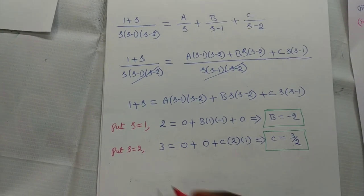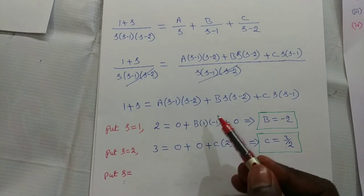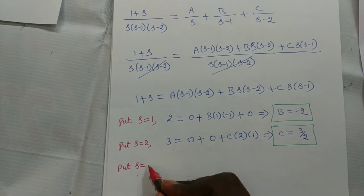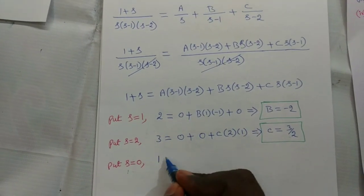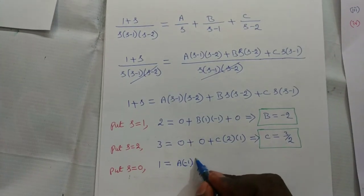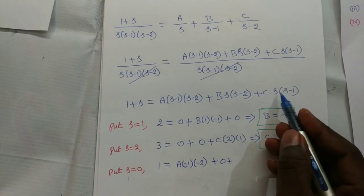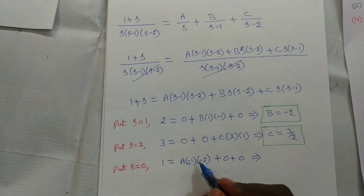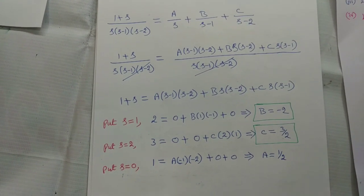To find A, put s equal to 0: 0 plus 1 equals 1; the B and C terms vanish, giving A times (0 minus 1)(0 minus 2) equals A times minus 1 times minus 2 equals 2A equal to 1, therefore A equal to 1 by 2.